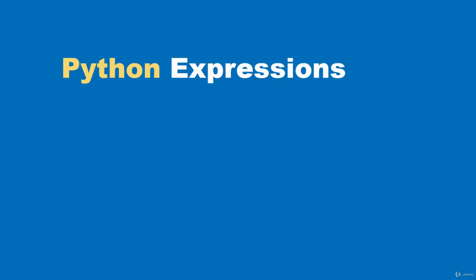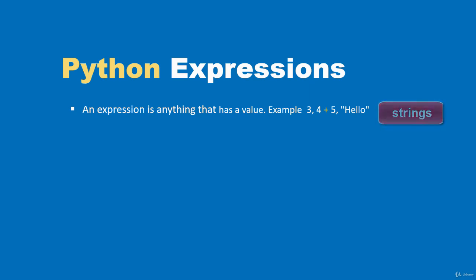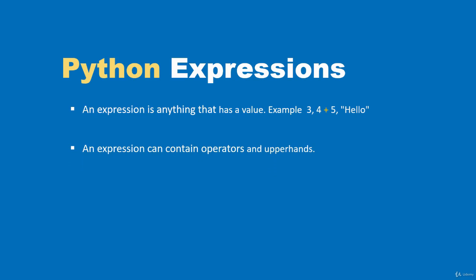In this video we'll look at Python expressions. An expression is anything that has a value — for example, the number 3, the expression '4 + 5', or the string 'hello'. Texts are referred to as strings in Python. An expression can contain operators like the plus operator and operands — in '4 + 5', four and five are operands while plus is the operator.